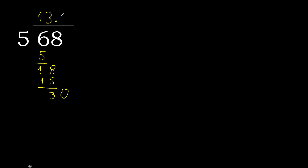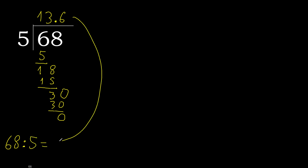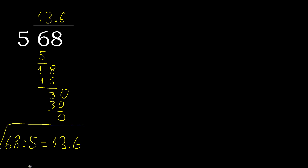30. 5 multiplied by 6 is 30. 30 minus 30 is 0. Therefore finish. 68 divided by 5 is finished.